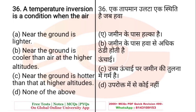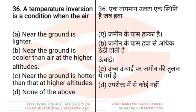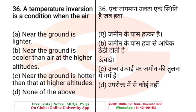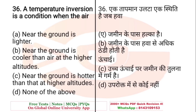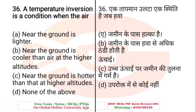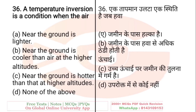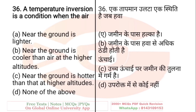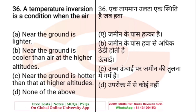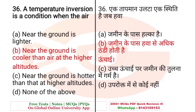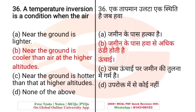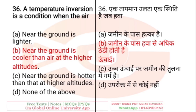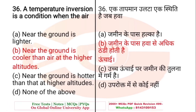Question: A temperature inversion is a condition when the air — A. Near the ground is lighter, B. Near the ground is cooler than air at higher altitude, C. Near the ground is hotter than at higher altitudes, D. None of the above. The right answer is B — near the ground is cooler than air at higher altitudes. That condition is called temperature inversion.